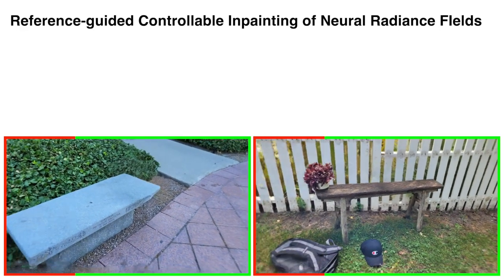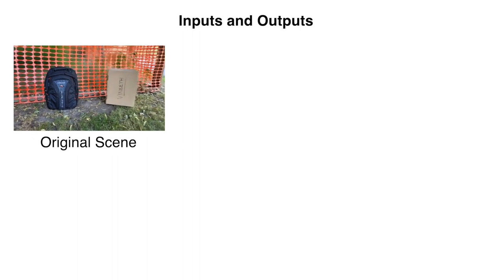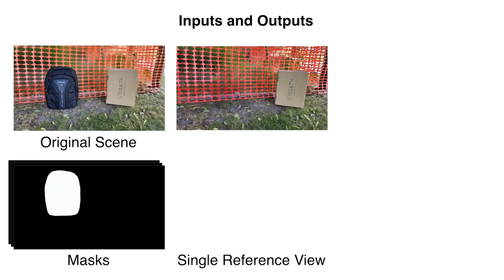We present reference-guided controllable inpainting of neural radiance fields. To inpaint a NeRF scene, in addition to the conventional NeRF inputs and the mask of the unwanted object, we ask the user to provide a single inpainted view of the scene, which we call the reference view.